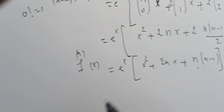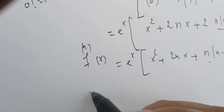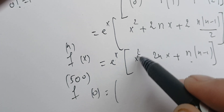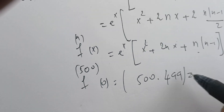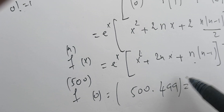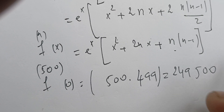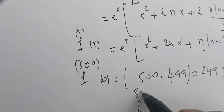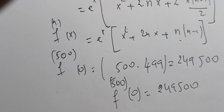Now we plug in n = 500 and x = 0. We get eˣ evaluated at 0 is 1, x² = 0, and 2nx = 0. Only the last term survives: n(n−1) = 500 × 499 = 249,500. So f⁽⁵⁰⁰⁾(0) = 249,500.